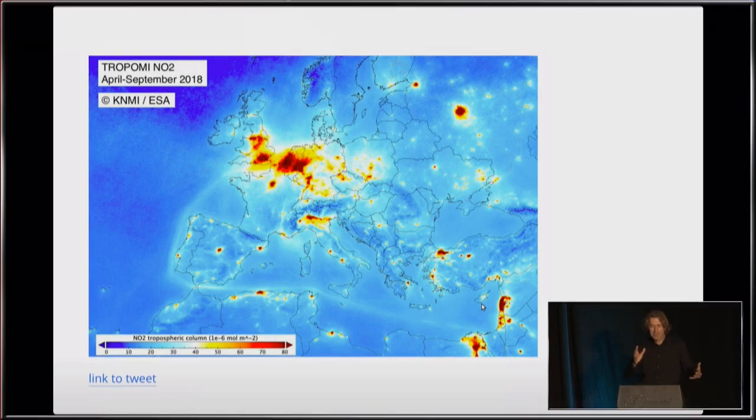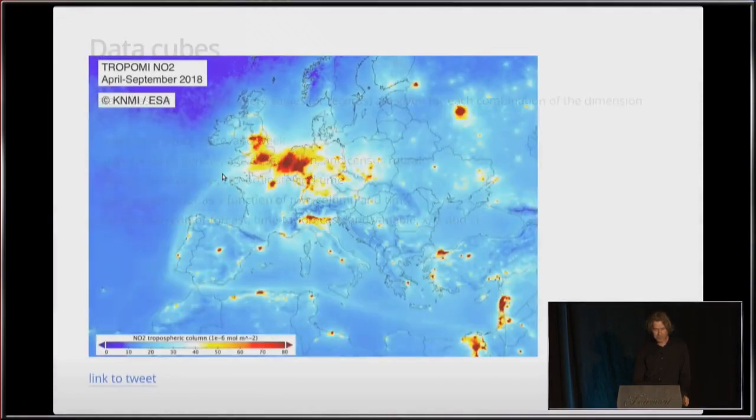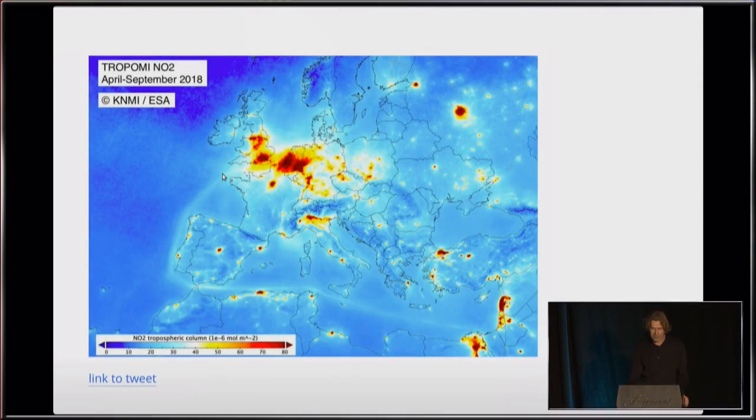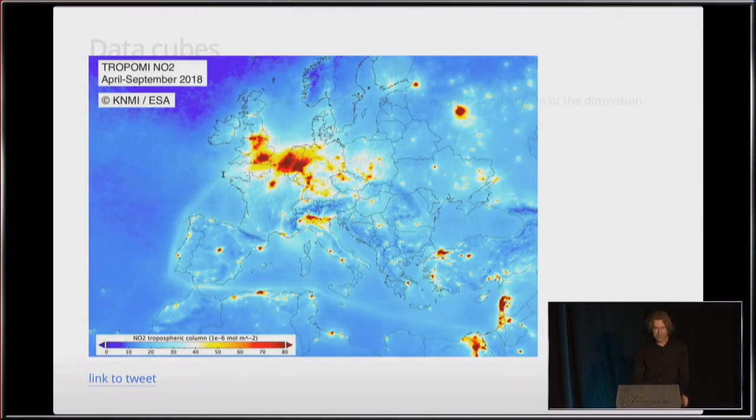And this looks like what you typically see from models, but this is actually measurement. This is measured atmospheric composition. So this is six months of imagery compiled together, and you see for those living in Europe, you see a fairly familiar pattern. But what you also see is the ship lines flowing here. So you see even the NO2 emitted by sea traffic. And it is quite revolutionary that you get this from pure measurements. There's of course a lot of heavy processing going on there.